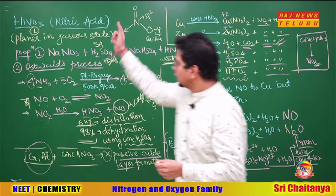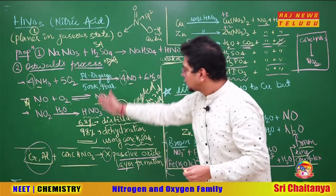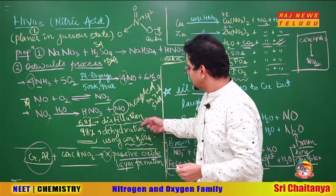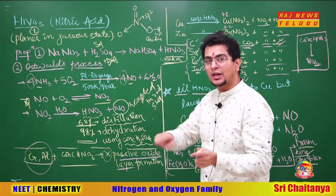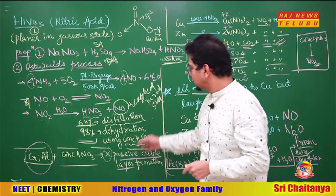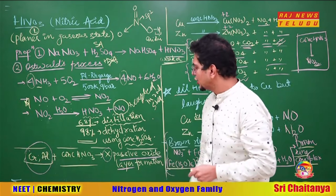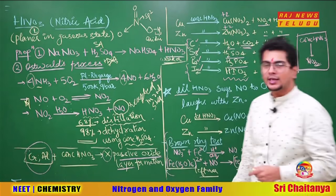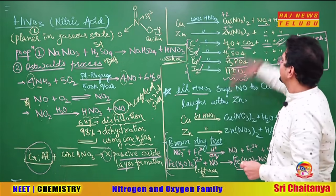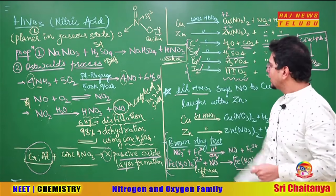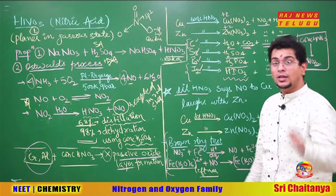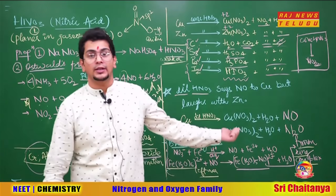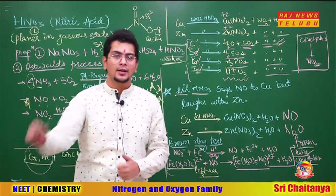So we have understood HNO3: the Ostwald process, up to 68% by distillation, then azeotrope requiring dehydration, chromium and aluminium forming a passive oxide layer, concentrated HNO3 reactions always releasing NO2 gas, dilute HNO3 laughing with zinc (N2O) and saying no to copper (NO), and the brown ring test.